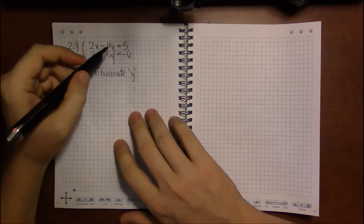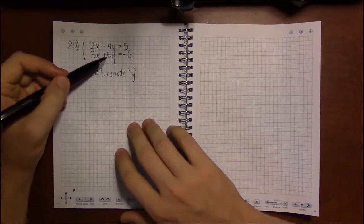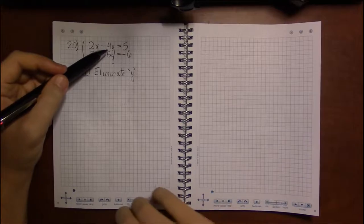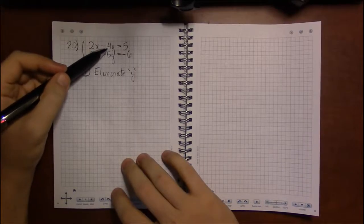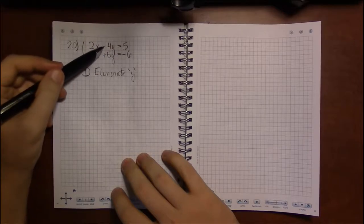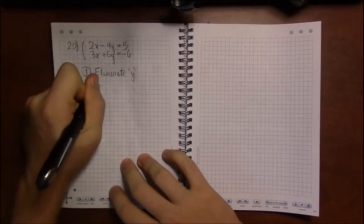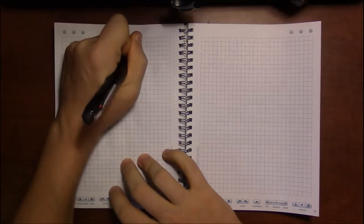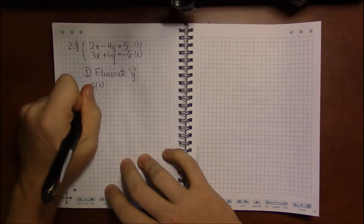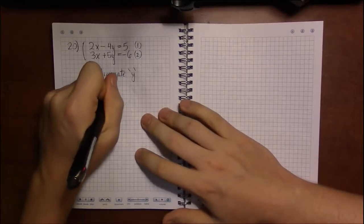So if we eliminate y, we need to find a number into which 4 and 5 divide nicely. So that would be 20. Now they already have a different sign. So if I multiply equation 1 by 5—I need to label these equations—and equation 2 by 4, then let's see what I get.